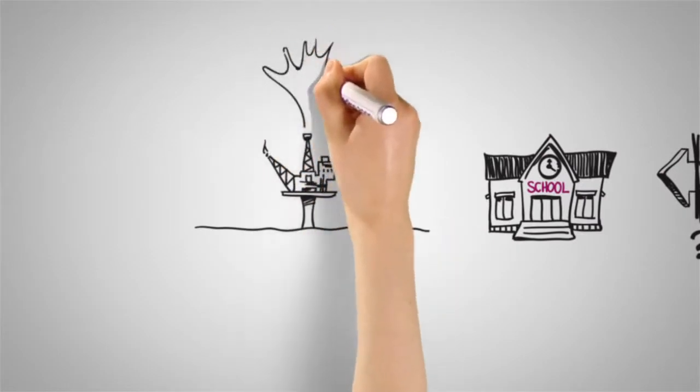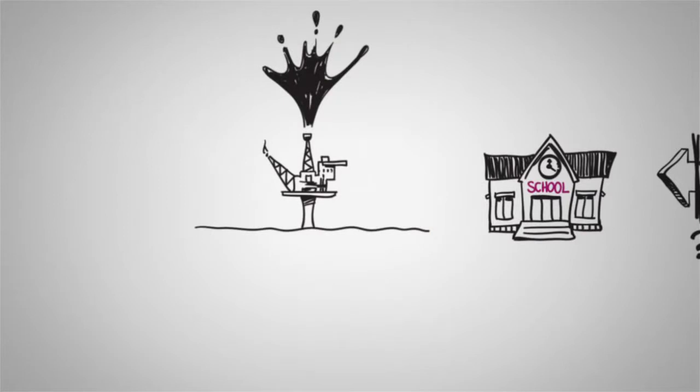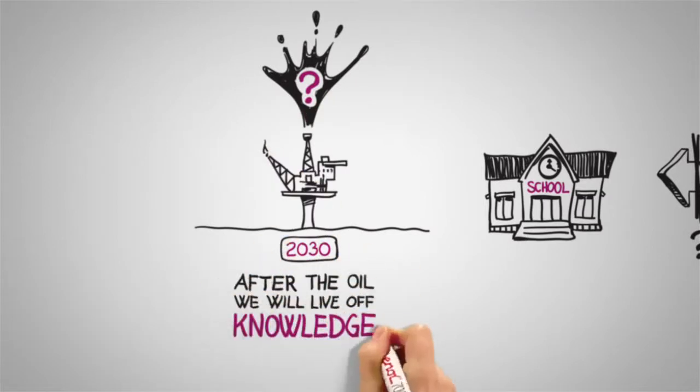Norway currently makes a good living from its oil. However, it could all be gone by as soon as 2030. People say that after the oil, we will live off knowledge.